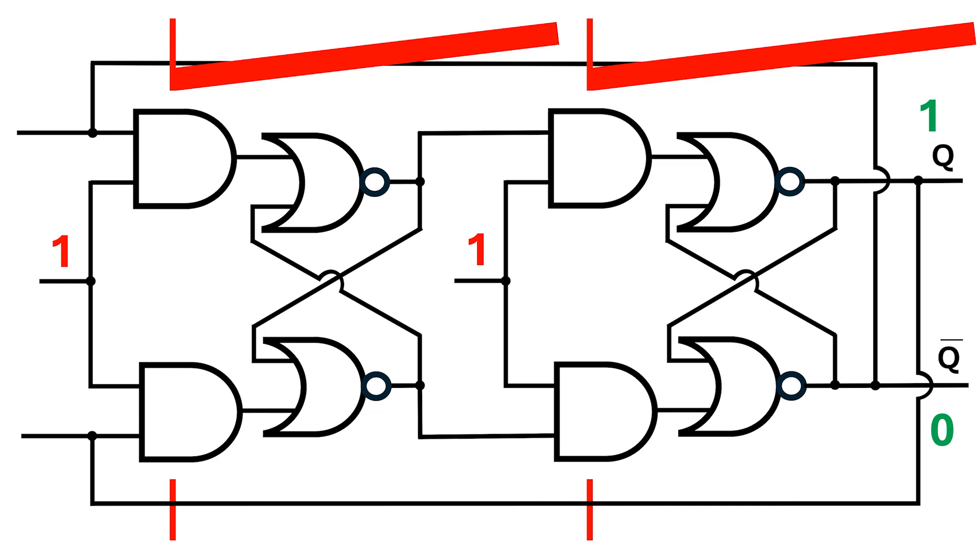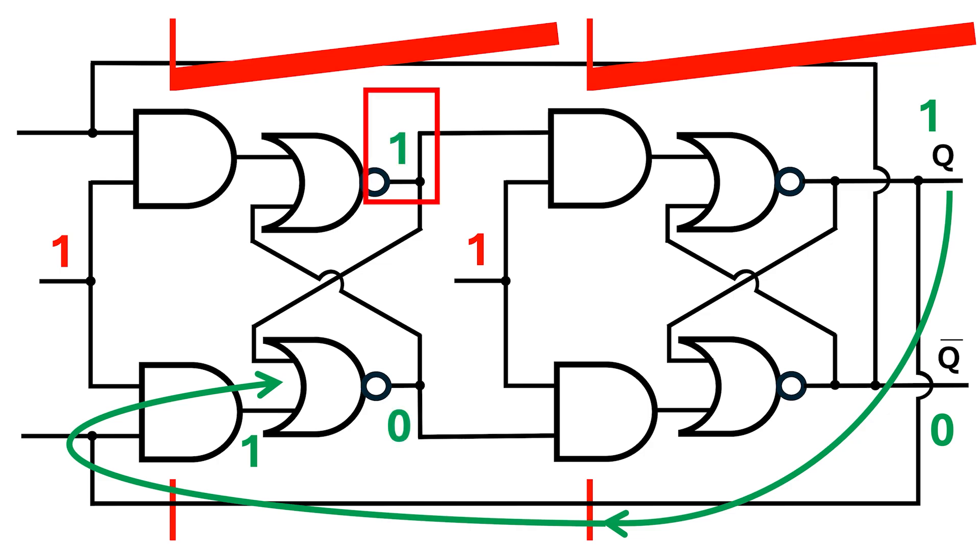The output on Q feeds back to the lower left AND gate, which causes the left SR latch to output 1-0. This goes through the second SR latch on the right, which causes its output to go to 0-1. Then, the cycle continues. This is how the race condition occurs.